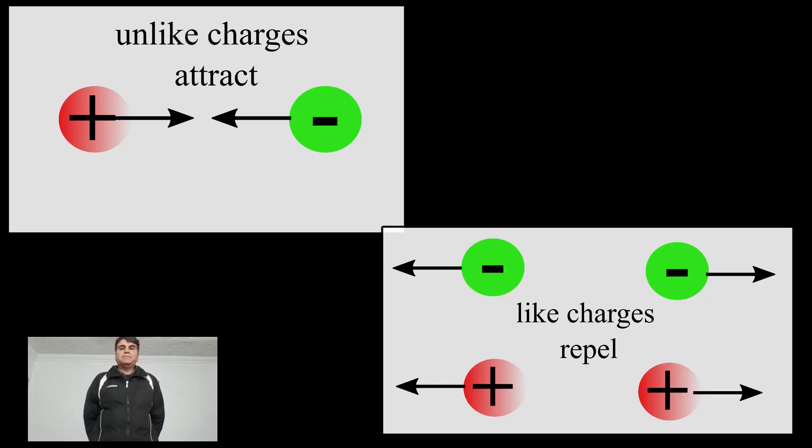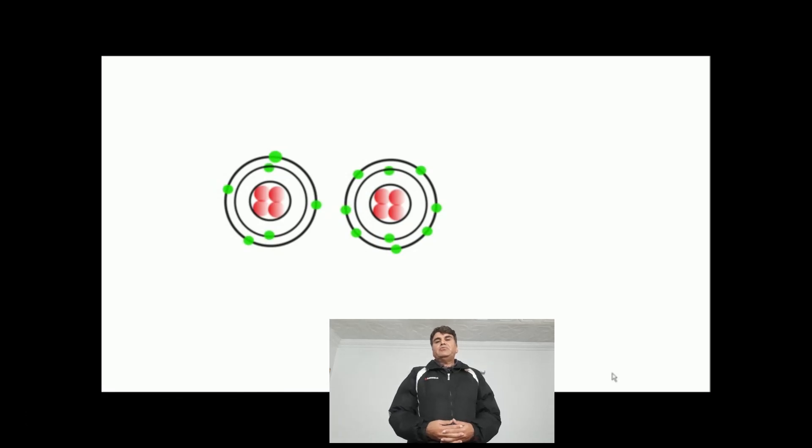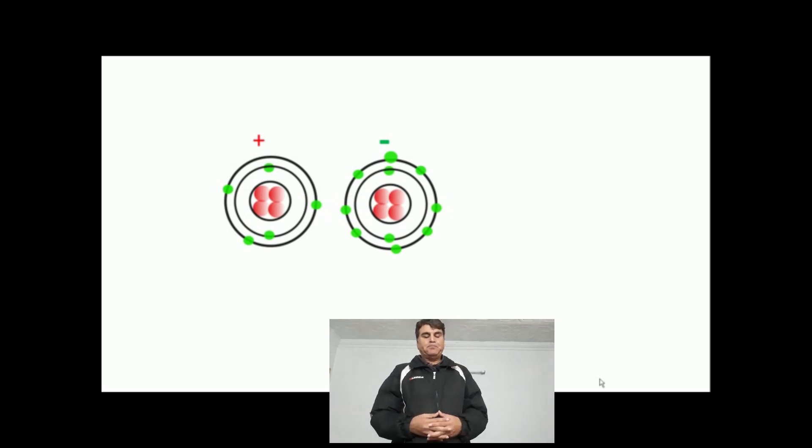Later on, in introduction to atomic model, the negative charge of a body was related to the excess of electrons, and the positive charge was related to the deficiency of electrons in the body.